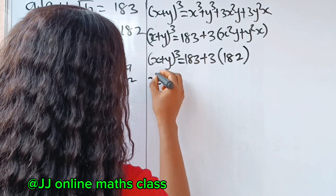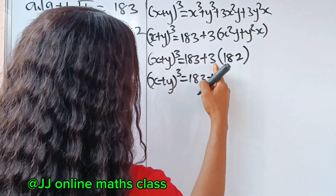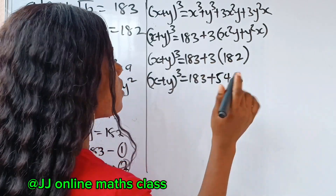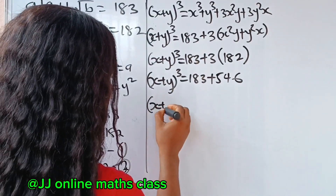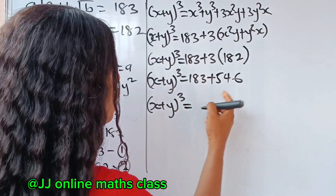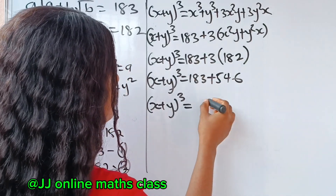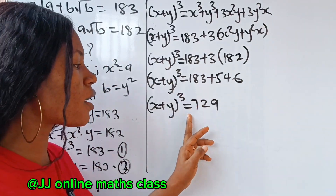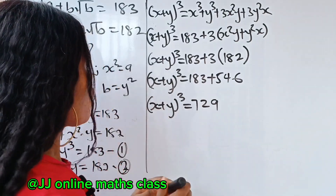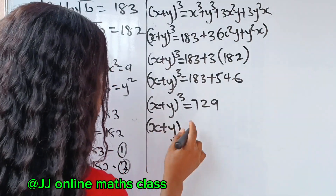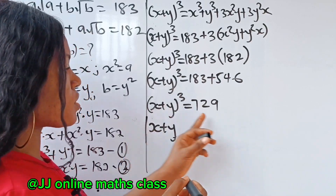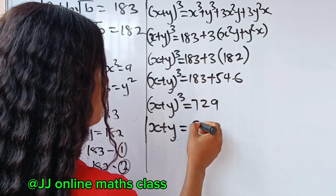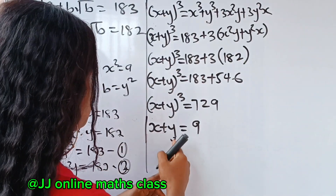So x plus y cubed equals 183 plus 3 times 182, since x²y plus y²x equals 182. That gives 183 plus 546 equals 729. So x plus y to the power of 3 is equal to 729. Taking the cube root of both sides gives us x plus y equals 9. Let's call this equation 3.